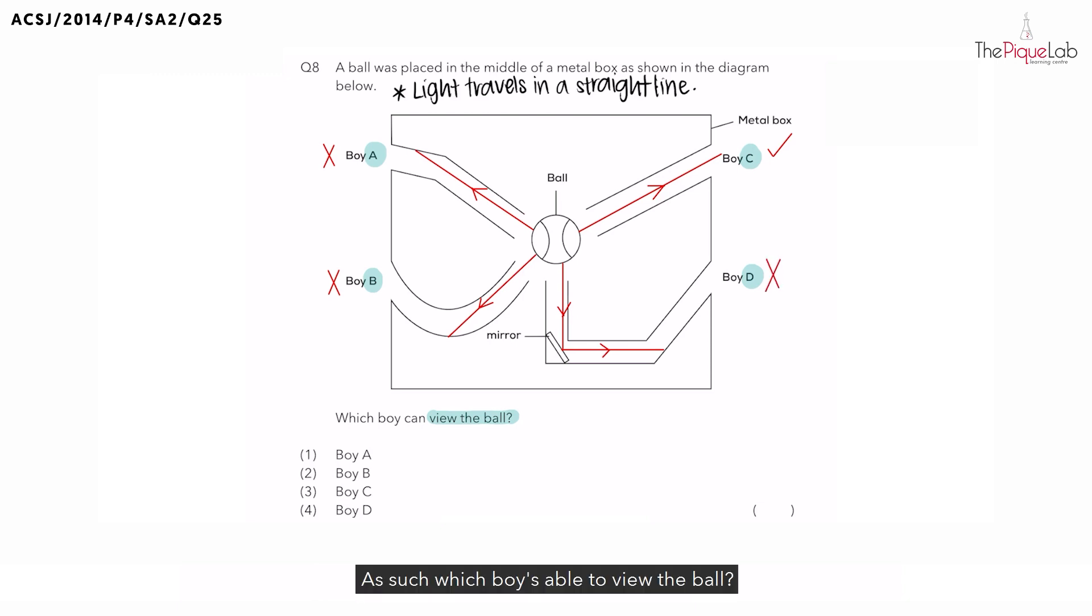As such, which boy is able to view the ball? The answer would only be boy C. Number 3 would be the correct answer.